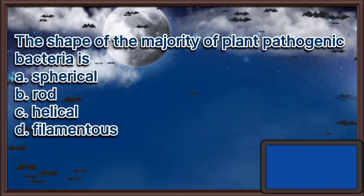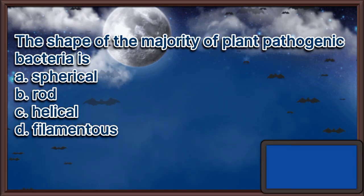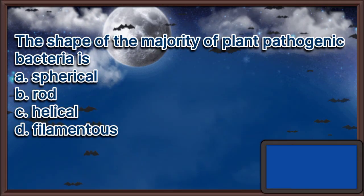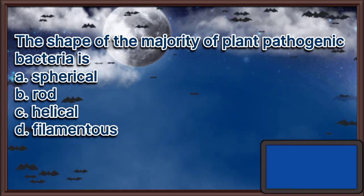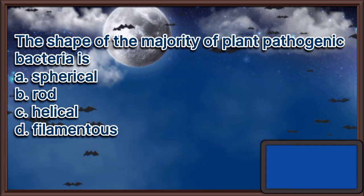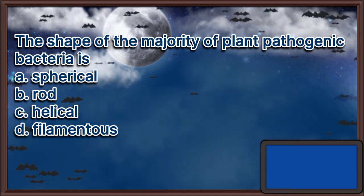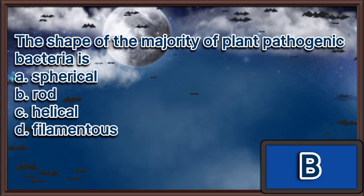The shape of the majority of plant pathogenic bacteria is: A. Spherical, B. Rod, C. Helical, D. Filamentous. The answer is letter B.